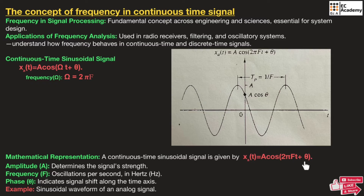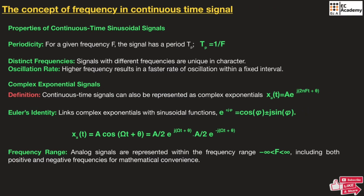An example of this mathematical representation is the sinusoidal waveform of an analog signal. Now, let us understand the properties of continuous time sinusoidal signals. The first property is periodicity: for a given frequency F, the signal has period Tp, where Tp = 1/F.